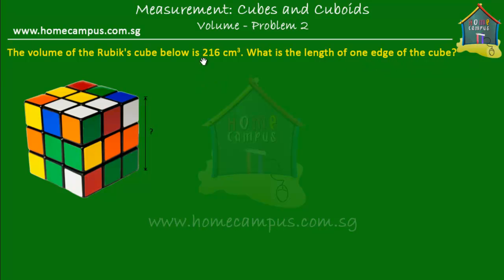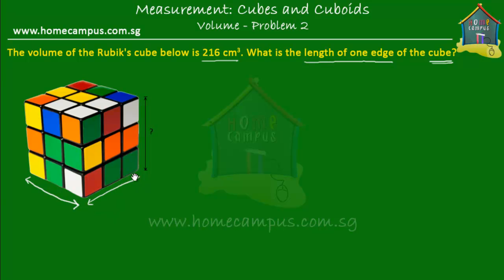What is given to us is that the volume of the cube is 216 cubic centimeters, and we have to find the length of one edge of the cube. Note that this is a cube, which means that the length of the cube is equal to the breadth of the cube, and that's equal to the height of the cube.